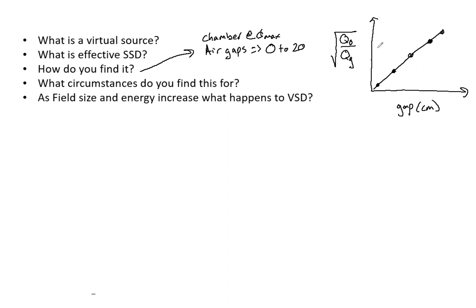To actually find the effective SSD, you have to use the equation: one divided by the slope that we just determined, and then subtract d-max. That is going to give you your effective SSD.